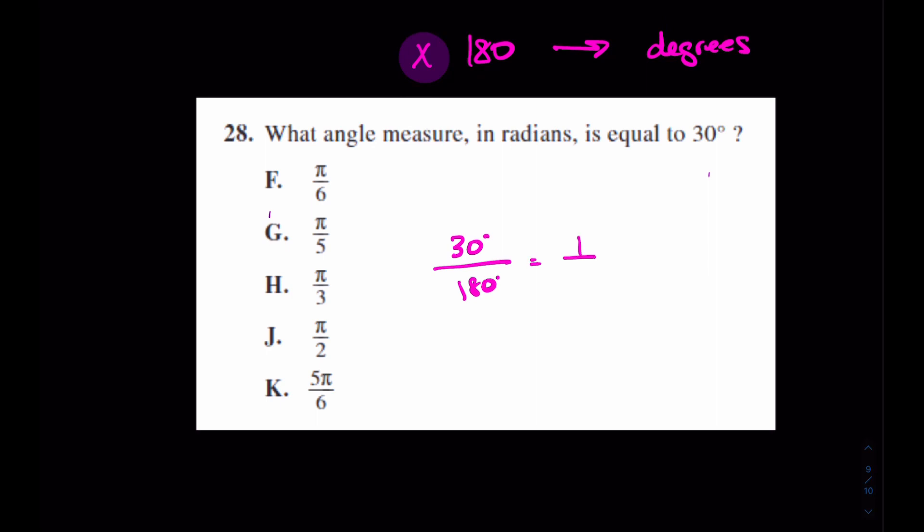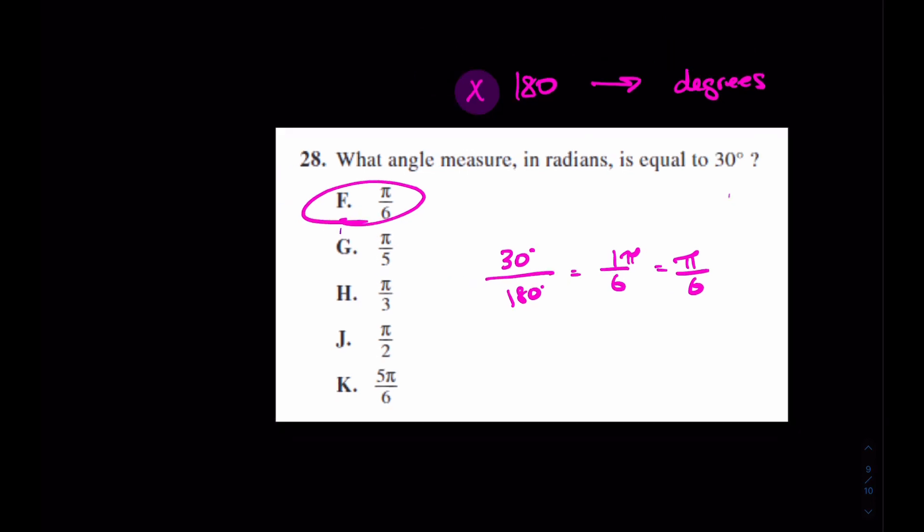And that's going to give you 1 sixth, really 1π over 6, better known as π/6. The answer is F. Easy enough, let's keep it up.